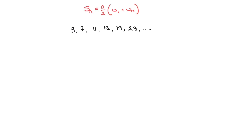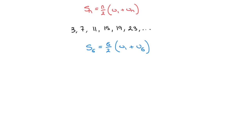The formula tells us that the sum of the first six terms is S6 equals 6 over 2 times (u1 plus u6), where u1 is the first term of the sequence and u6 would be the sixth term, which in this case is 23. To calculate the sum of the first six terms, all we need to do is replace every n we see inside the formula by six.